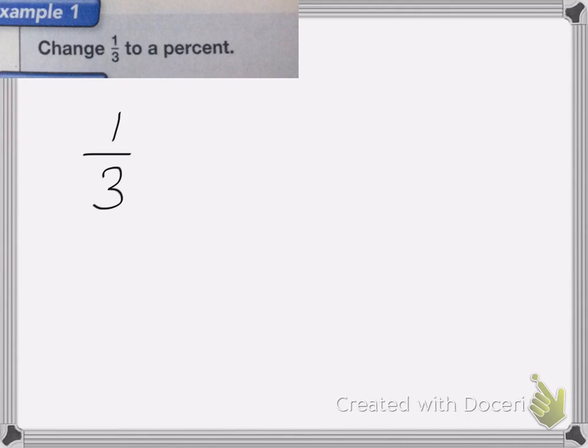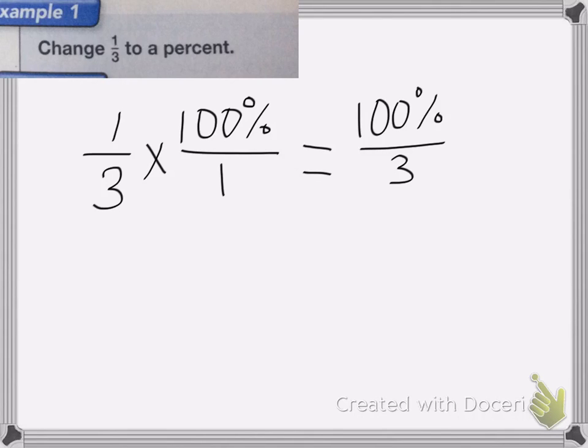So if I have 1/3, I want to change that to a percent. What I'm going to do is multiply that by 100%. And since it's a fraction, I'm going to put it over 1. So we're going to multiply it across, so I get 100% over 3. So I'm going to divide these two numbers. I need to divide 100% by 3.